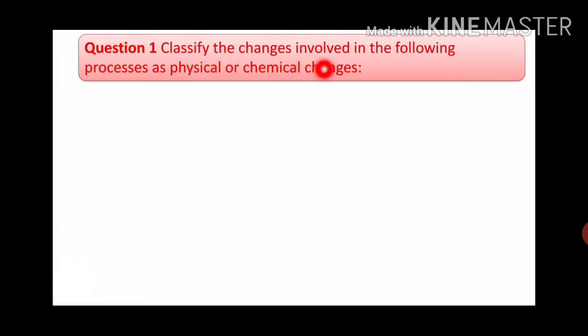Question number 1: classify the changes involved in the following processes as physical or chemical changes. We have given some processes and we need to identify whether these are physical or chemical changes. Wherever there are shape changes or characteristic changes, it is a physical change. If the characteristic of the entire substance changes and a new substance is formed, then it is a chemical change.